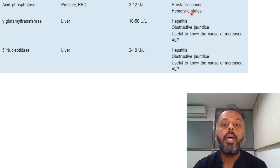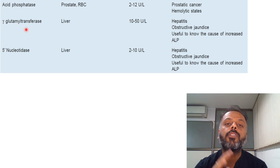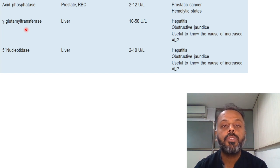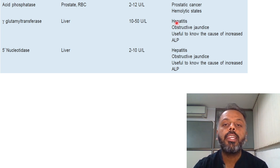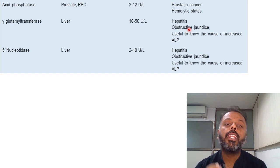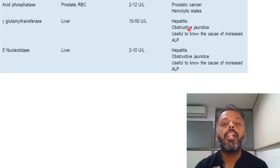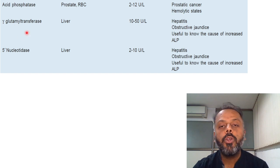Another enzyme is Gamma Glutamyl Transferase, or GGT. As the name suggests, it transfers the gamma glutamyl residue to a substrate. The source is the liver, and the normal level is 10 to 50 units per litre. Its levels increase in hepatitis and obstructive jaundice. Importantly, GGT is a very useful and sensitive marker for the detection of alcohol abuse — remember GGT for alcohol abuse.